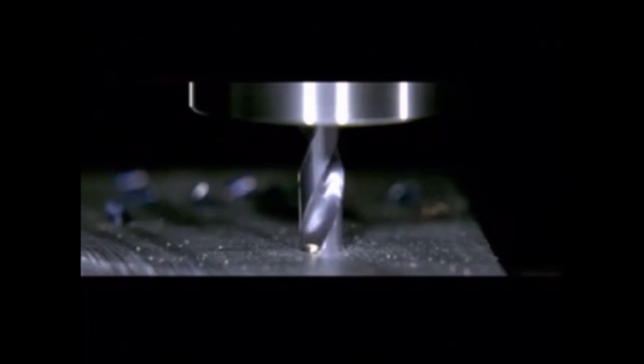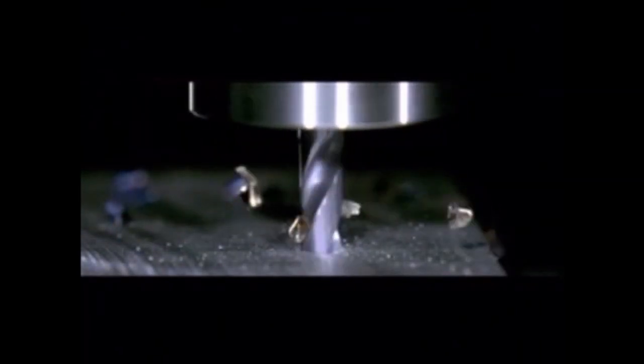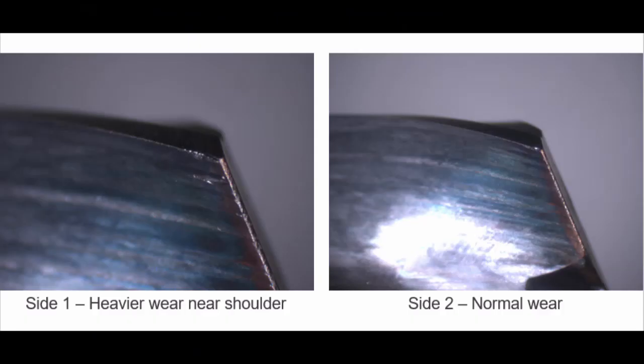This effect is more pronounced at the tip of the tool and especially when dealing with long overhangs. In many cases, a key indicator of runout is uneven tool wear, especially towards the margin and shoulder of the tool.